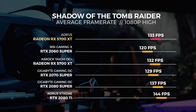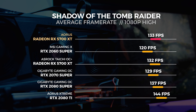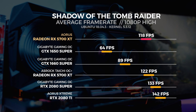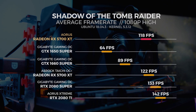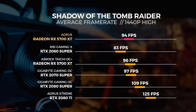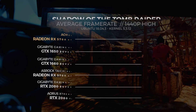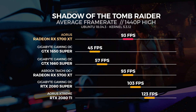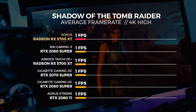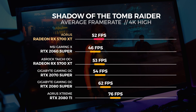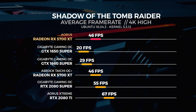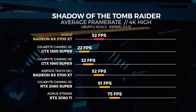For the 1080p test in Windows, the Aorus card got an average of 133 fps. For the 1080p test in Linux, the Aorus card got an average of 118 fps. For the 1440p test in Windows, the Aorus card got an average of 94 fps. For the 1440p test in Linux, the Aorus card got an average of 93 fps. For the 4K test in Windows, the Aorus card got an average of 52 fps. And for the 4K test in Linux, the Aorus card also got an average of 52 fps.